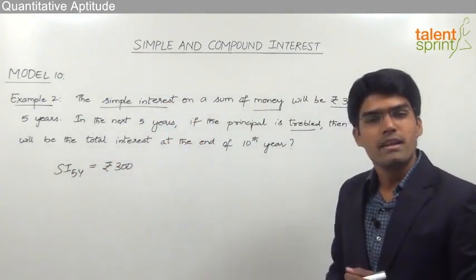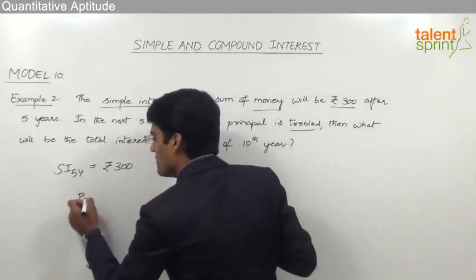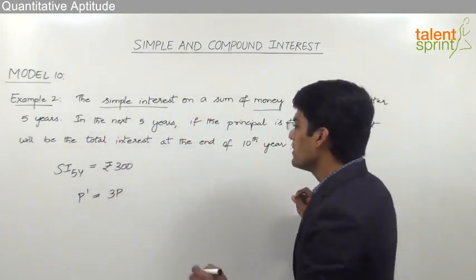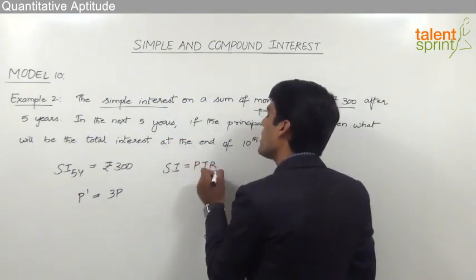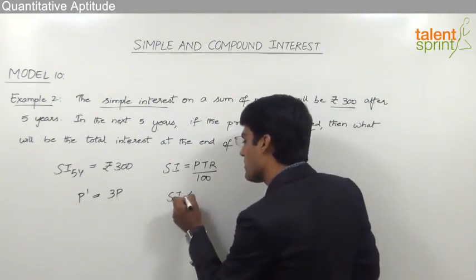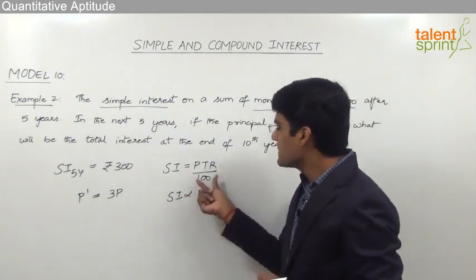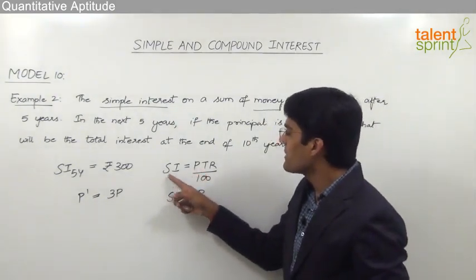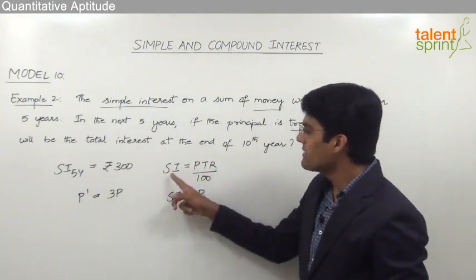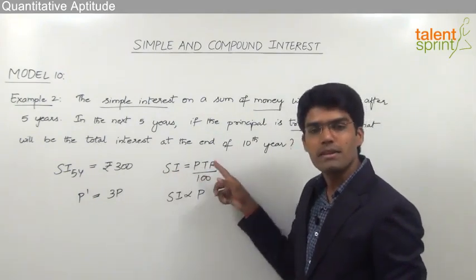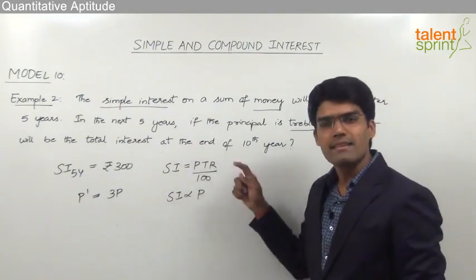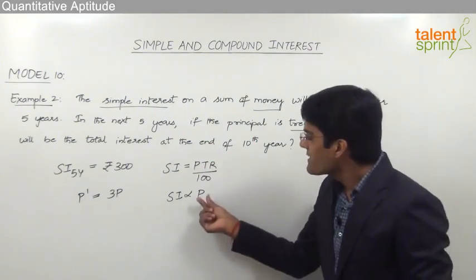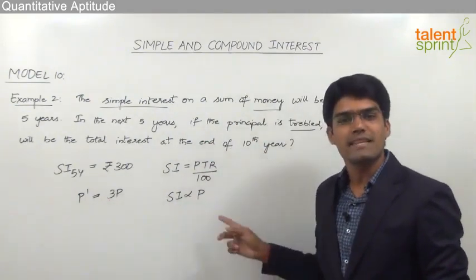In the next 5 years, the principal is trebled — that means the principal amount P becomes 3 times, so the new principal P' = 3P. We know that simple interest = (P × T × R) / 100, which means simple interest is directly proportional to the principal amount. As the principal increases, simple interest increases proportionately. Simple interest is also proportional to time period and rate of interest, so when any of these three increases or decreases, the simple interest changes proportionately.